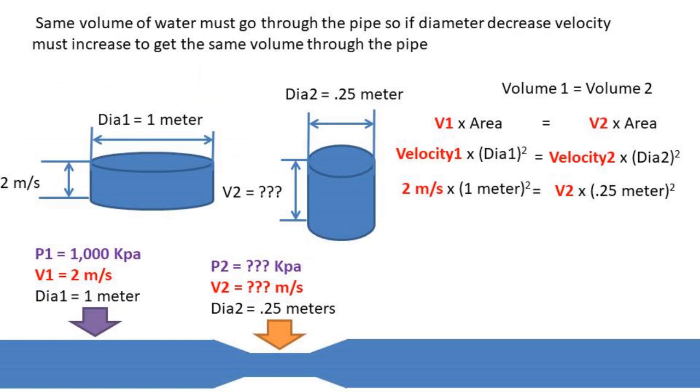Now, in order to get the equation down to one unsolved variable, we must find the velocity. In order to do so, we must know that the volume of water per second at point 1 must equal the volume per second at point 2.